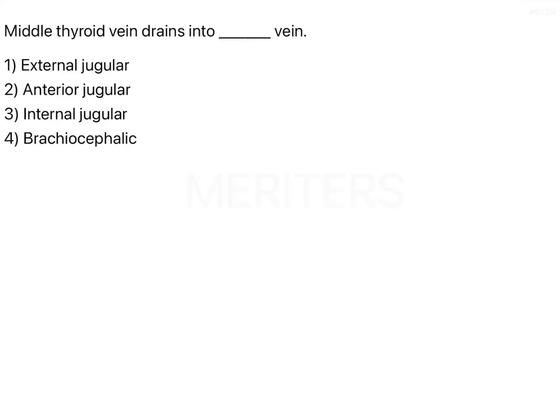Middle thyroid vein drains into which vein? The options are external jugular vein, anterior jugular vein, internal jugular vein, and brachiocephalic vein. If you know a little bit about thyroid venous supply, you can rule out the external and anterior jugular vein, leaving a confusion between internal jugular and brachiocephalic.